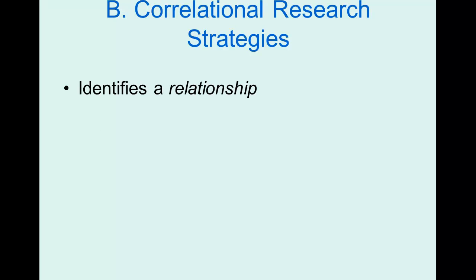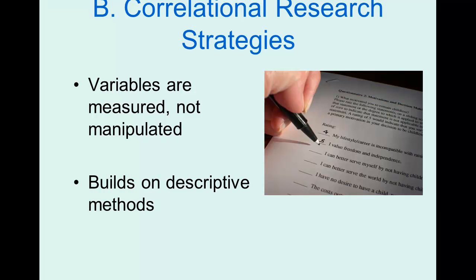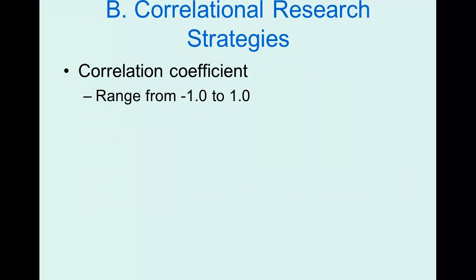The second kind of strategy is the correlational strategy. Here we're looking at a relationship — trying to see if variable A is related to variable B. Variables are measured, not manipulated. This is different from the experiment, where you manipulate variables. A correlational research strategy ends up with what's called a correlation coefficient — another name for number — which represents the relationship strength. It ranges from negative one to positive one.